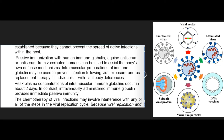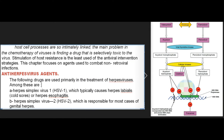Passive immunization with human immune globulin, equine antiserum, or antiserum from vaccinated humans can be used to assist the body's own defense mechanisms. Intramuscular preparations of immune globulin may be used to prevent infection following viral exposure and as replacement therapy in individuals with antibody deficiencies. Peak plasma concentrations of intramuscular immune globulin occur in about two days; in contrast, intravenously administered immune globulin provides immediate passive immunity. The chemotherapy of viral infections may involve interference with any or all of the steps in the viral replication cycle. Because viral replication and host cell processes are so intimately linked, the main problem in antiviral chemotherapy is finding a drug that is selectively toxic to the virus.